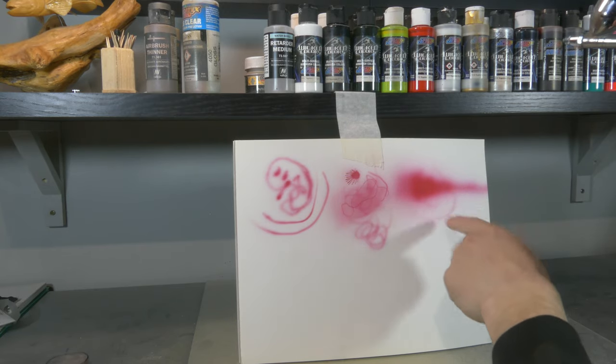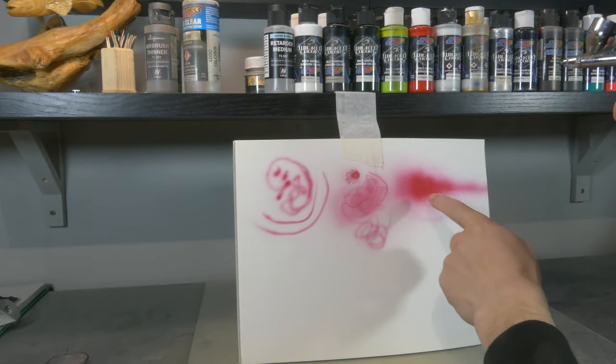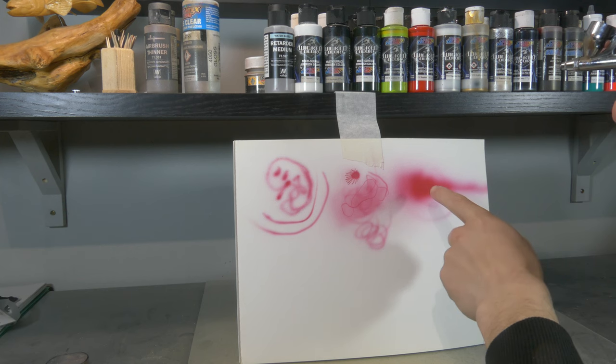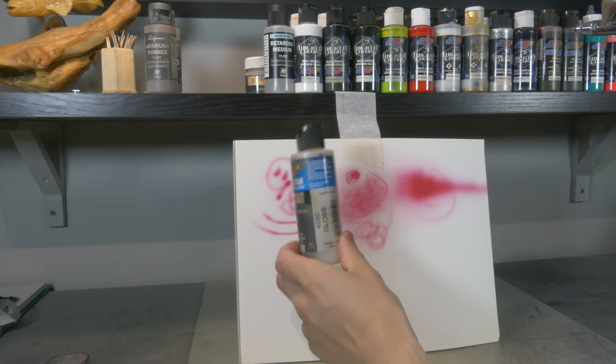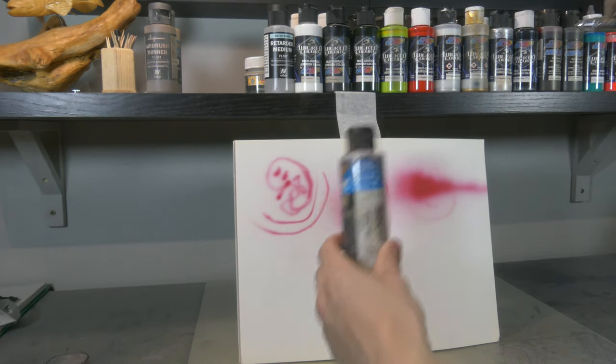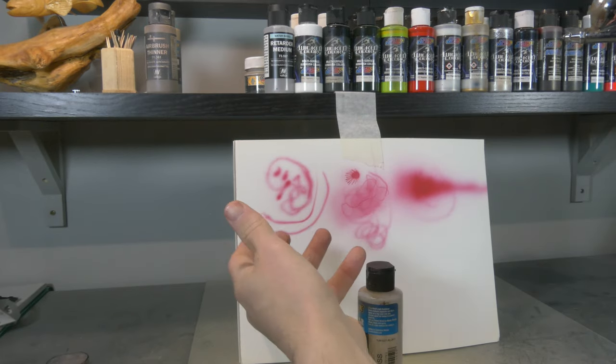But don't forget that you cannot base coat a lure with over reduced paint because you're going to lose adhesion. This paint does not adhere well to plastics. But for base coating, I always like to mix in a little bit of 4050 that's going to promote adhesion and it's going to make sure that my paint really sticks well to the bait. And it's going to make sure that my paint is going to be more durable at the end.